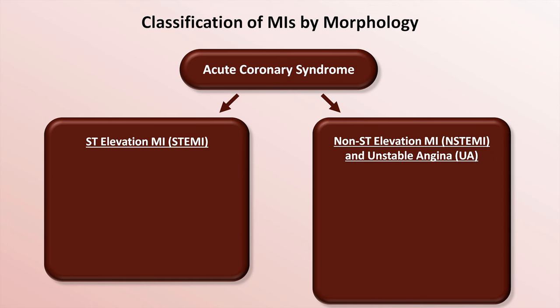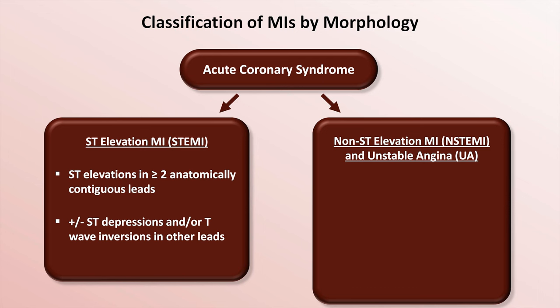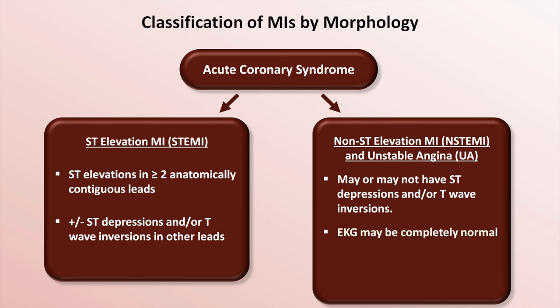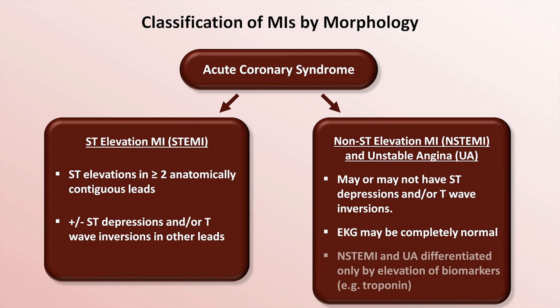Electrocardiographically, STEMIs demonstrate ST elevations in two or more anatomically contiguous leads, and usually, but not always, ST depressions and/or T-wave inversions in other leads. N-STEMIs and unstable angina may or may not have ST depressions and/or T-wave inversions, but the EKG may also be completely normal. N-STEMIs and unstable angina are differentiated from one another only by elevation of biomarkers in the former, such as troponin.